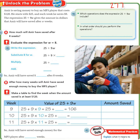I'm on page 277 in the GoMath textbook. Follow along. Amir is saving money to buy an MP3 player that costs $120. He starts with $25, and each week he saves $9. The expression 25 plus 9w — so $25 to start out with, plus $9 for every week — gives the amount in dollars that Amir will have saved after W weeks.